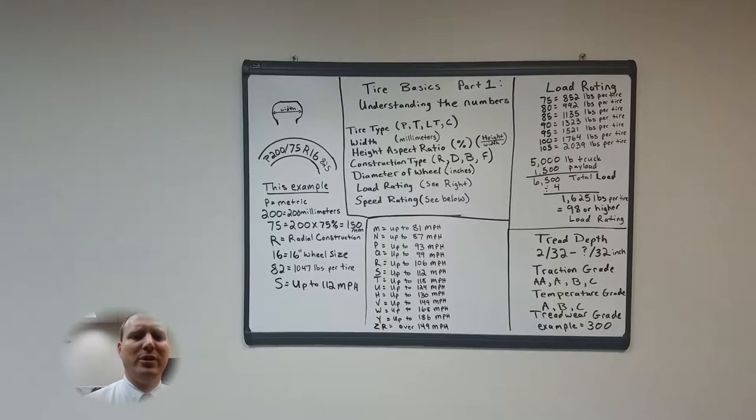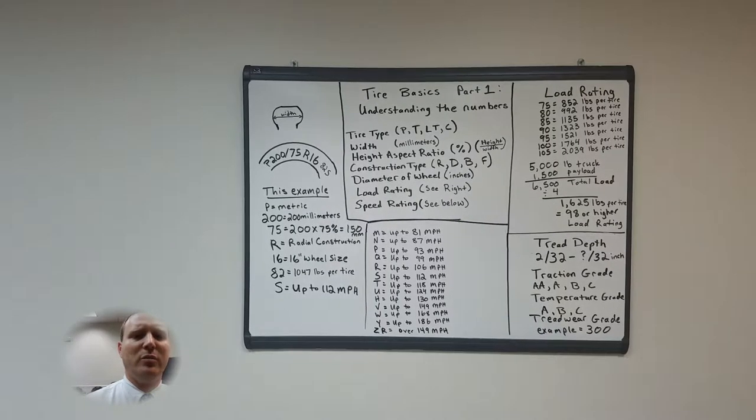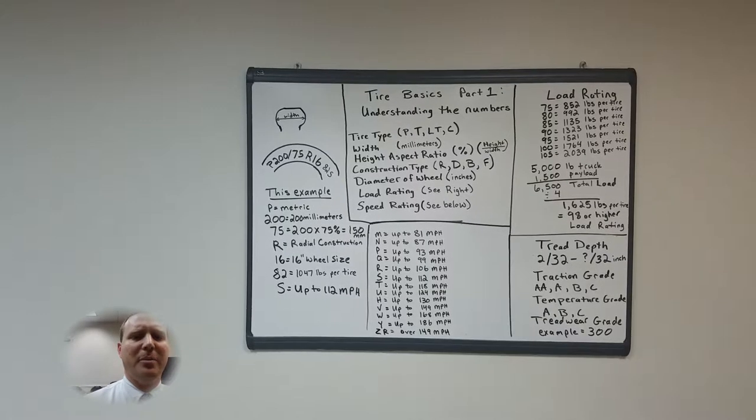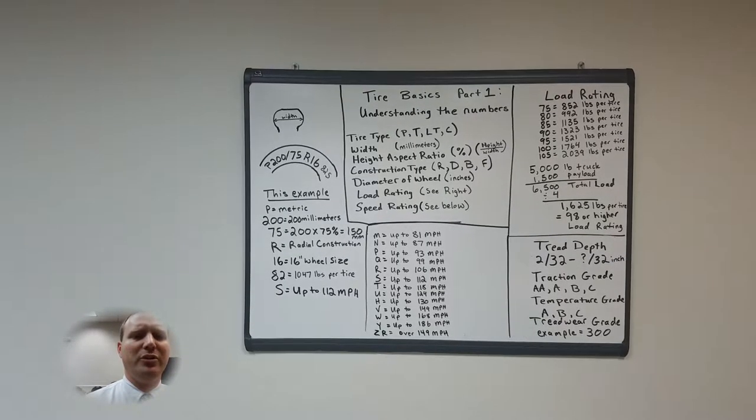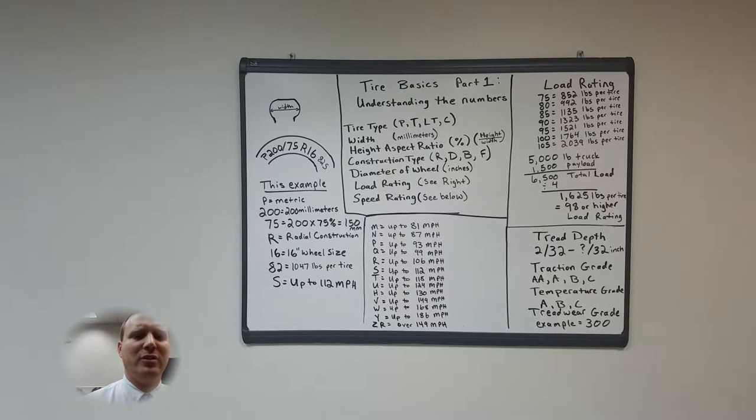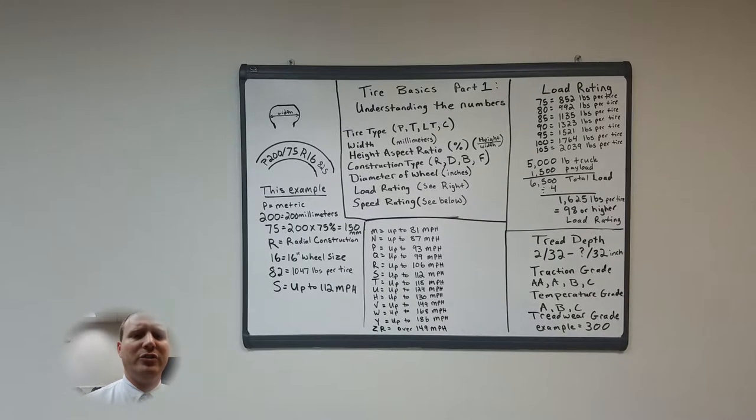The next number is your width in millimeters measured from the sidewall to sidewall. The number after that is your height aspect ratio measured in a percentage and that is achieved by taking the height of the section divided by the width from sidewall to sidewall.